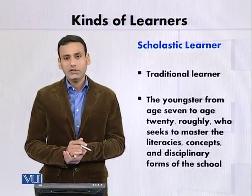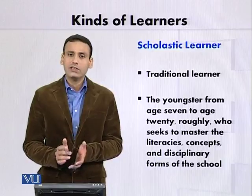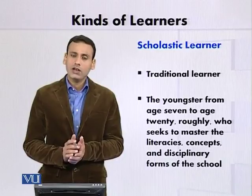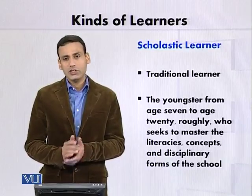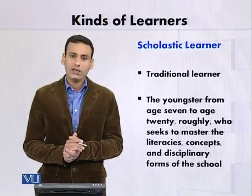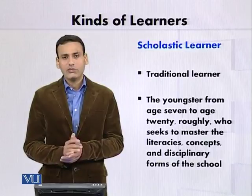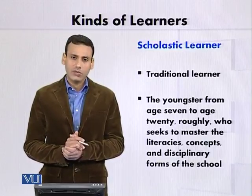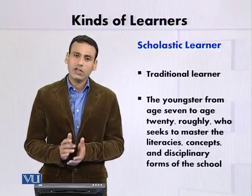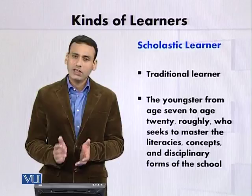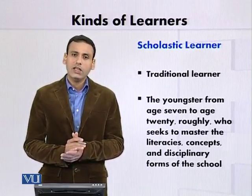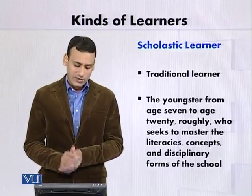The second type of learning style is scholastic learners — learners pertaining to school. They are the traditional learners، یعنی وہ learners جو روایتی اور رسمی طور پر تعلیم حاصل کرتے ہیں۔ یہ وہ youngsters ہیں جو چھ سال سے بیس سال کی عمر کے دوران کے ہیں، اور وہ تیار ہیں ان competencies کو master کرنے کے لیے — literacy اور methods جو school انہیں بتا رہا ہے، جس میں مختلف disciplines اور طریقہ کار شامل ہیں۔